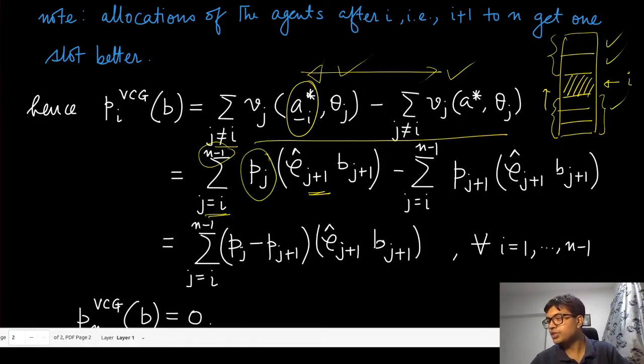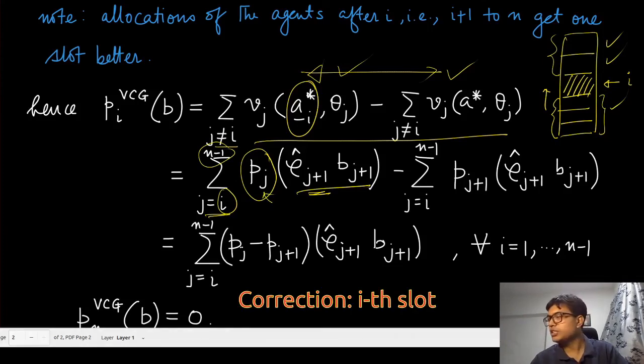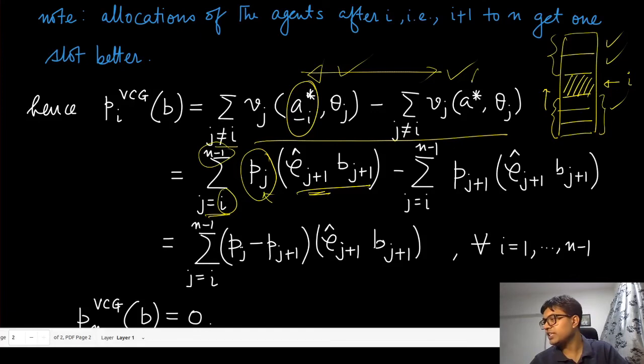For the jth position or the ith position, starting from that ith position, the next set of agents who were one step later in the actual ordering of these agents now start getting the jth slot. Similarly, when agent i is present, then j+1th agent is essentially getting the j+1th slot. There is no change, no shift in their position.